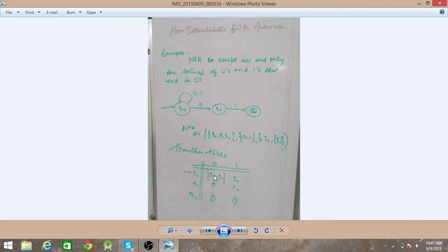Q0 on 0 goes to Q0 and Q1. So two states we have. Next, Q0 on 1 input goes to Q0. It remains on the same state.